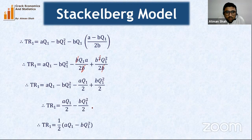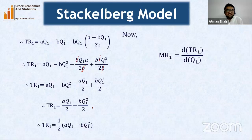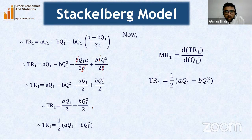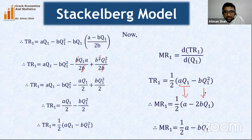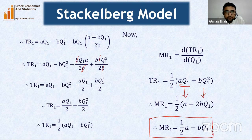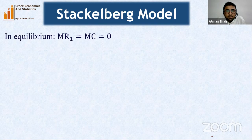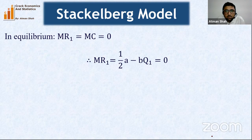Differentiating TR1 with respect to Q1 to get MR1: MR1 = (1/2)(a − 2bQ1) = (1/2)a − bQ1. Setting MR1 = MC = 0: (1/2)a = bQ1, therefore Q1 = a / 2b. This is the profit-maximizing quantity of firm 1 in the Stackelberg model.